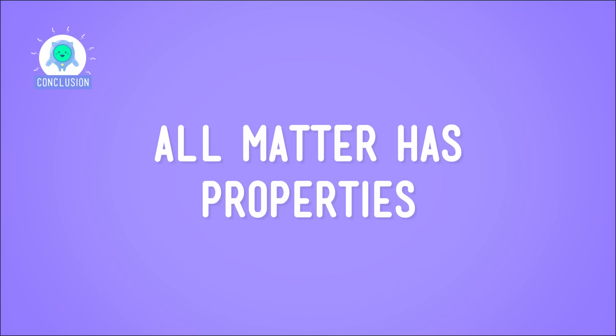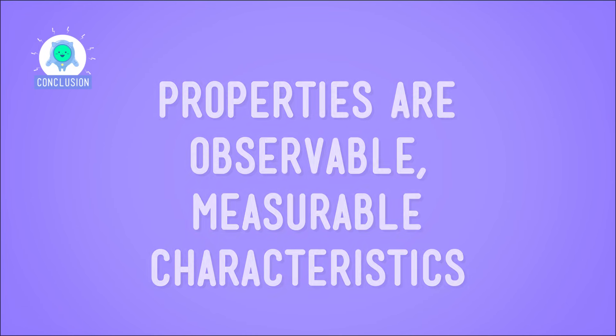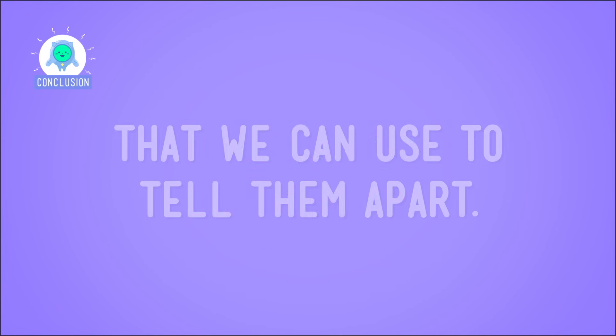So all matter has properties, and properties are observable, measurable characteristics that we can use to tell them apart. And we got to know some of the most common and useful properties that we can put a value or number on, like length, width, height, volume, and weight. So hey — blocks: not just for little kids, also super handy for doing science.